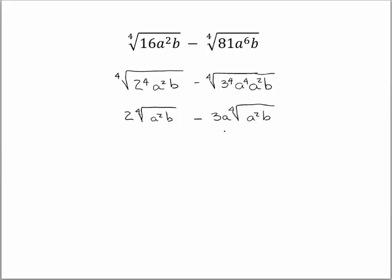Therefore we can add these. Remember that 2 and 3a are monomials — you cannot add 2 to 3a. What you have to do is simply write it in the form it's in: 2 minus 3a times the 4th root of a squared b. You cannot combine that 2 and 3 — these are two different terms.